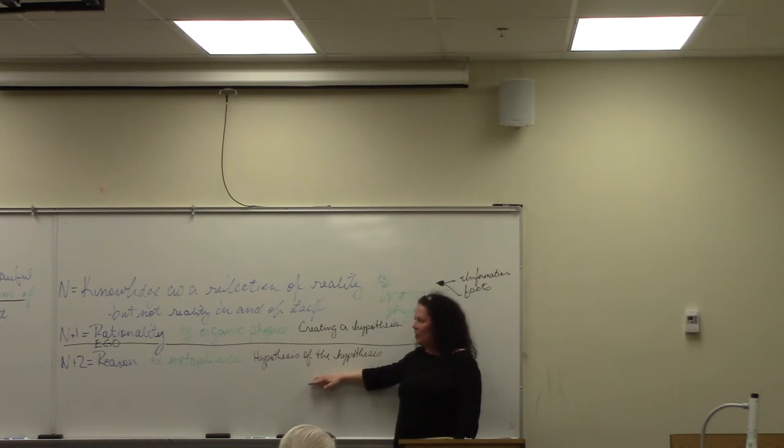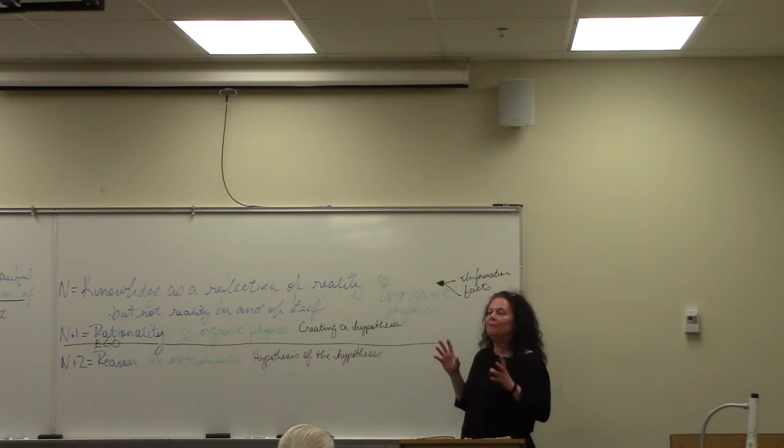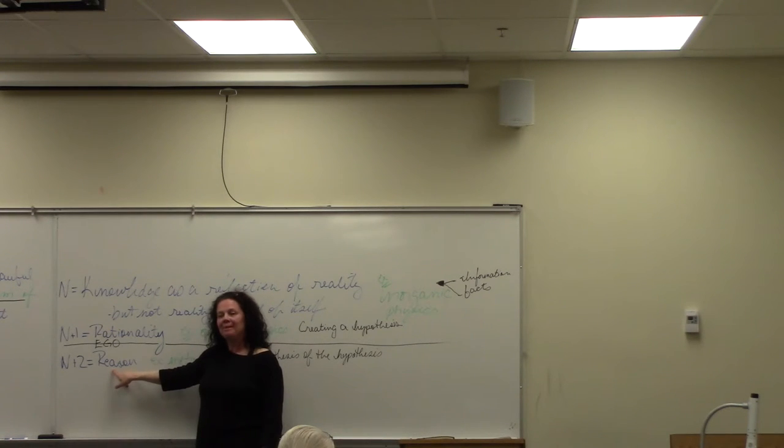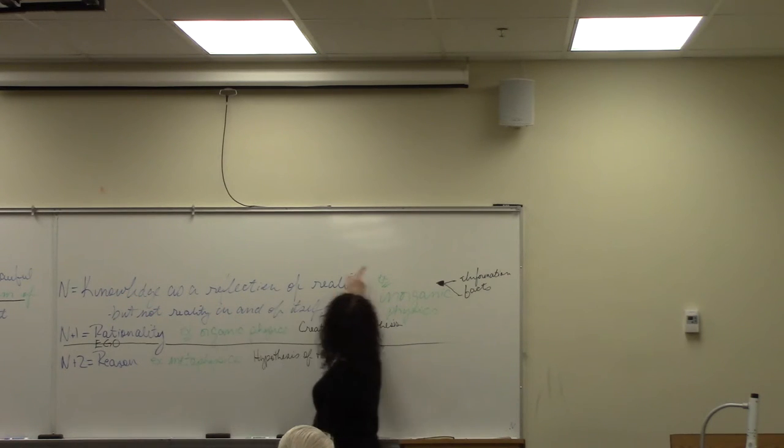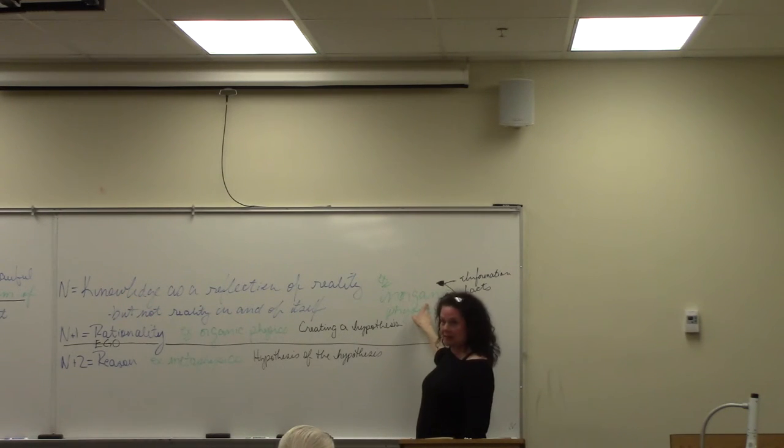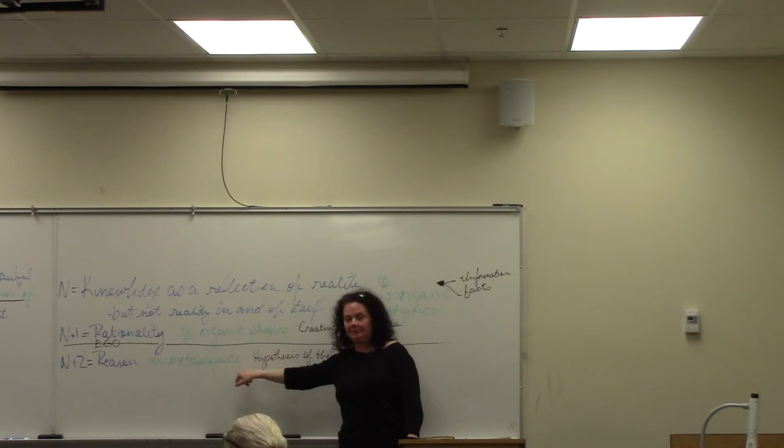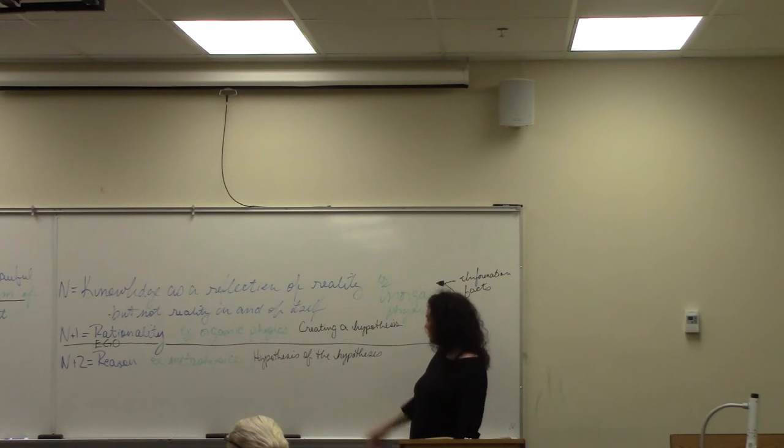Now, in this paper, LaRouche makes a lot of correlative statements about these three things: knowledge, rationality, and reason, which are platonic ideas, with inorganic physics, this is where Riemann and Leibniz's work is embedded in his economics. Inorganic physics, organic physics, and metaphysics. The Noah's theory.